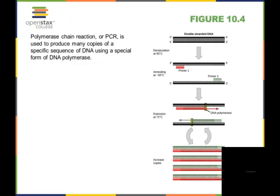The polymerase chain reaction or PCR is the one that's used to amplify the DNA. It allows you to make many copies of the DNA from a specific sequence of DNA using a form of DNA polymerase. So you start out with your double-stranded DNA. It will be denatured at 95 degrees Celsius.